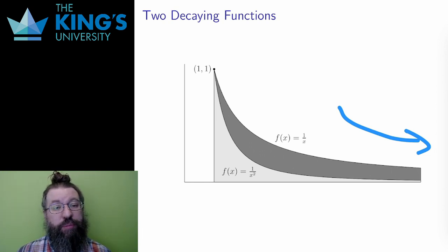What the improper integral tells me is that 1 over x squared gets small fast enough that the lighter shade of area here, going all the way out to infinity, is finite.